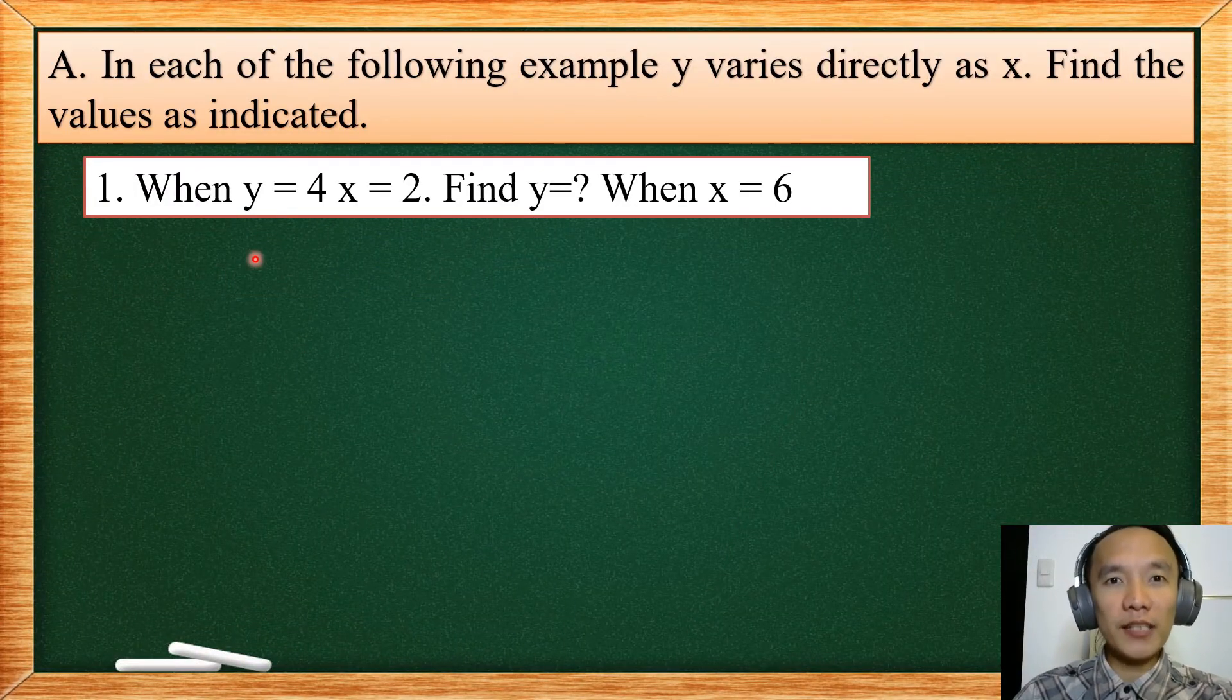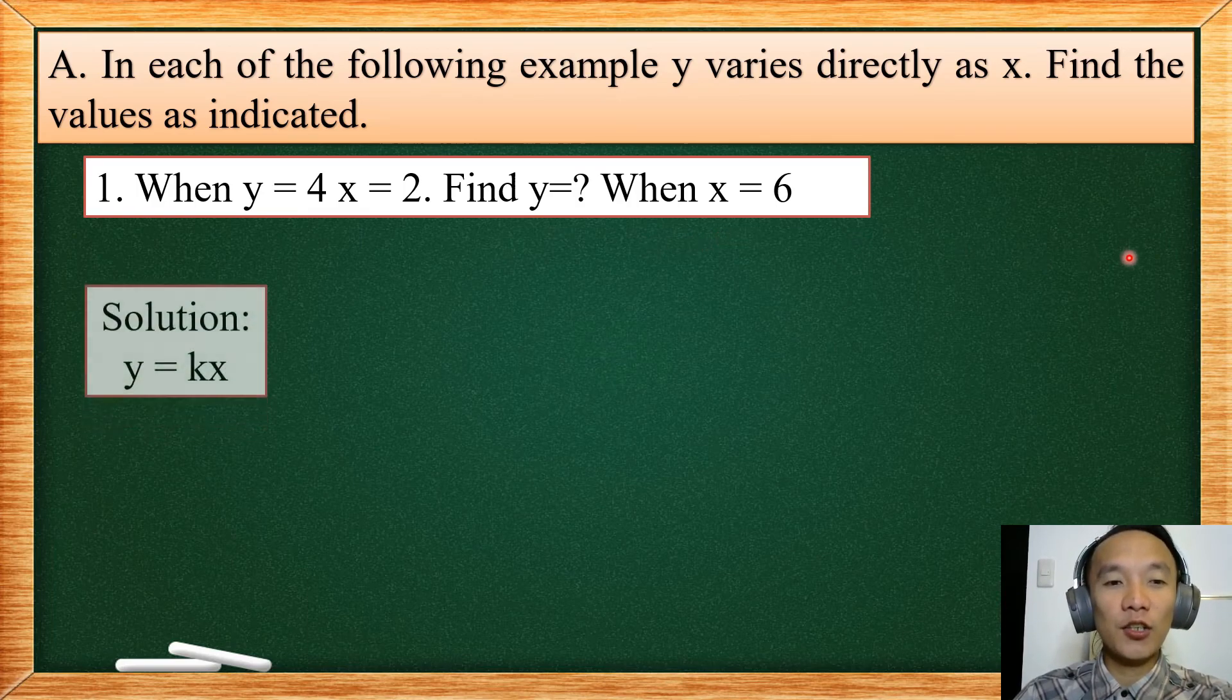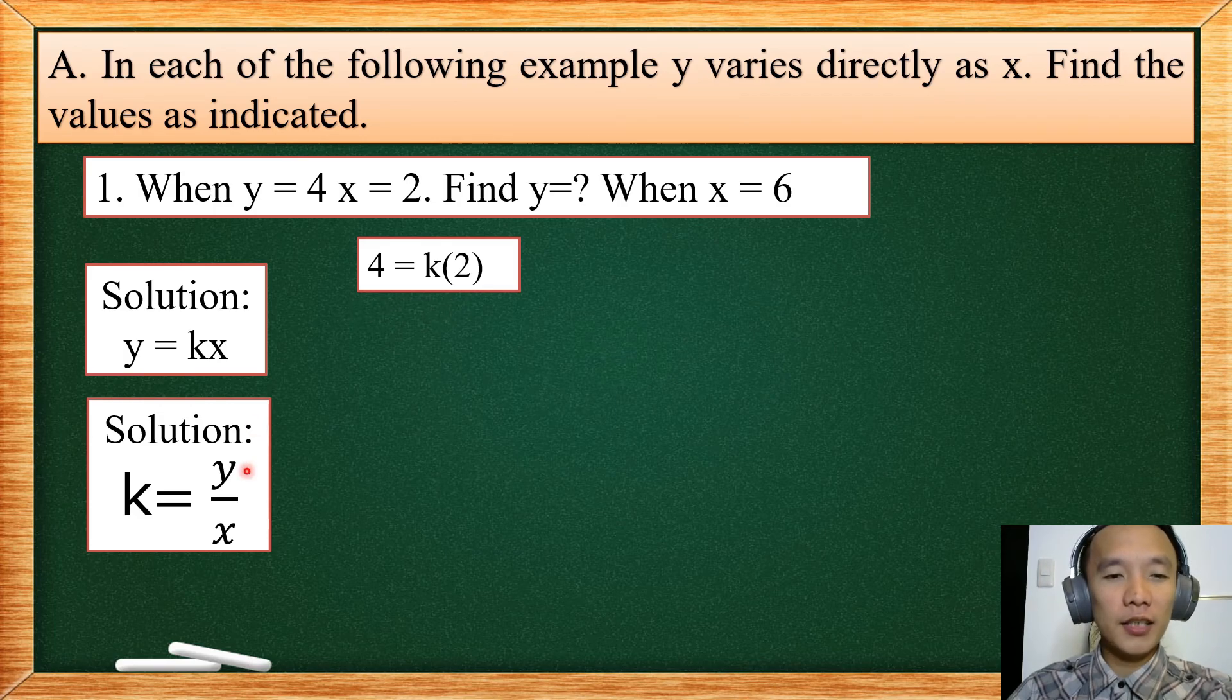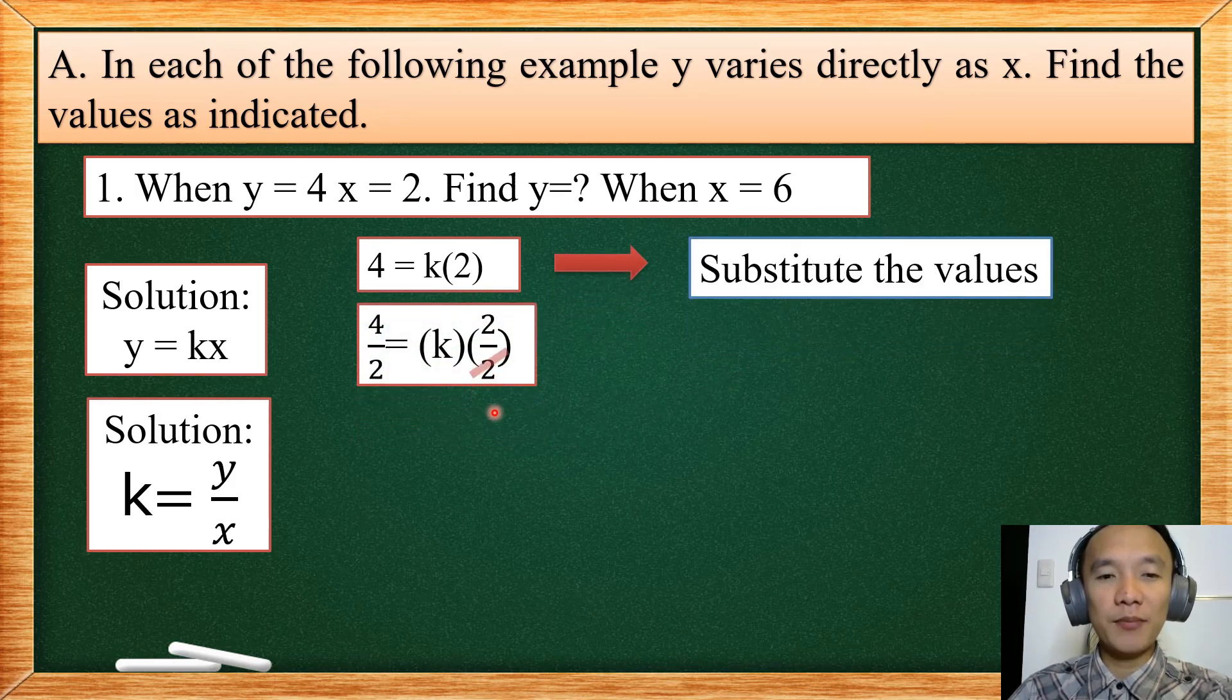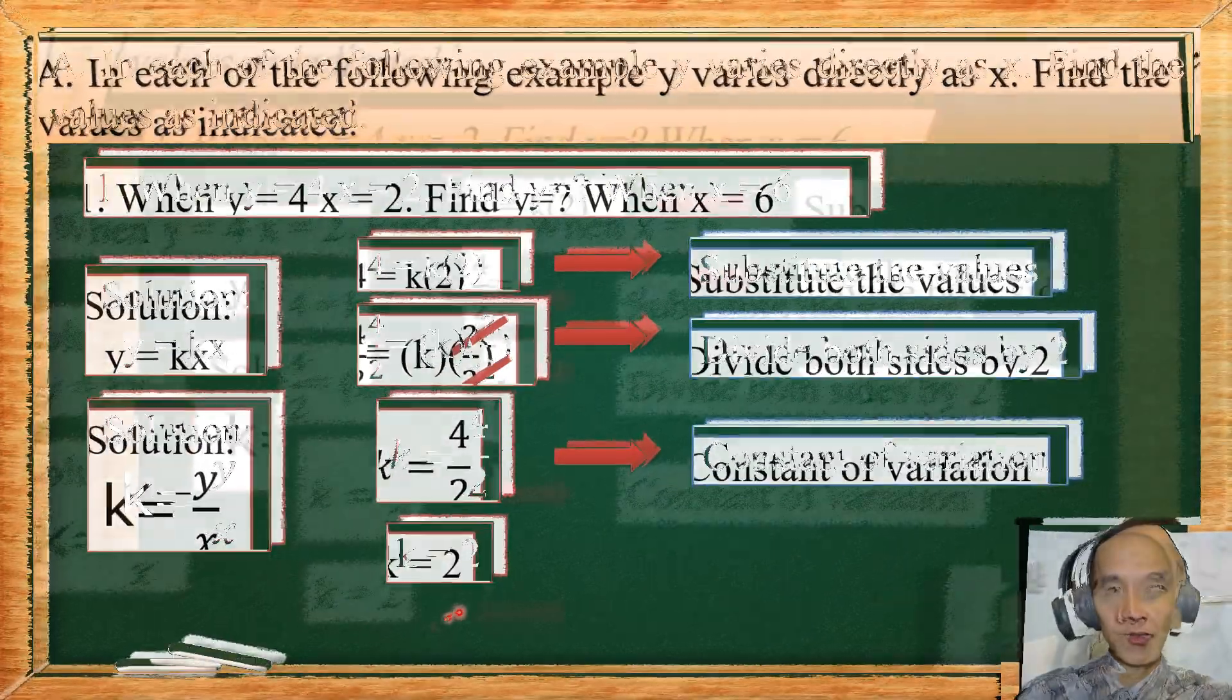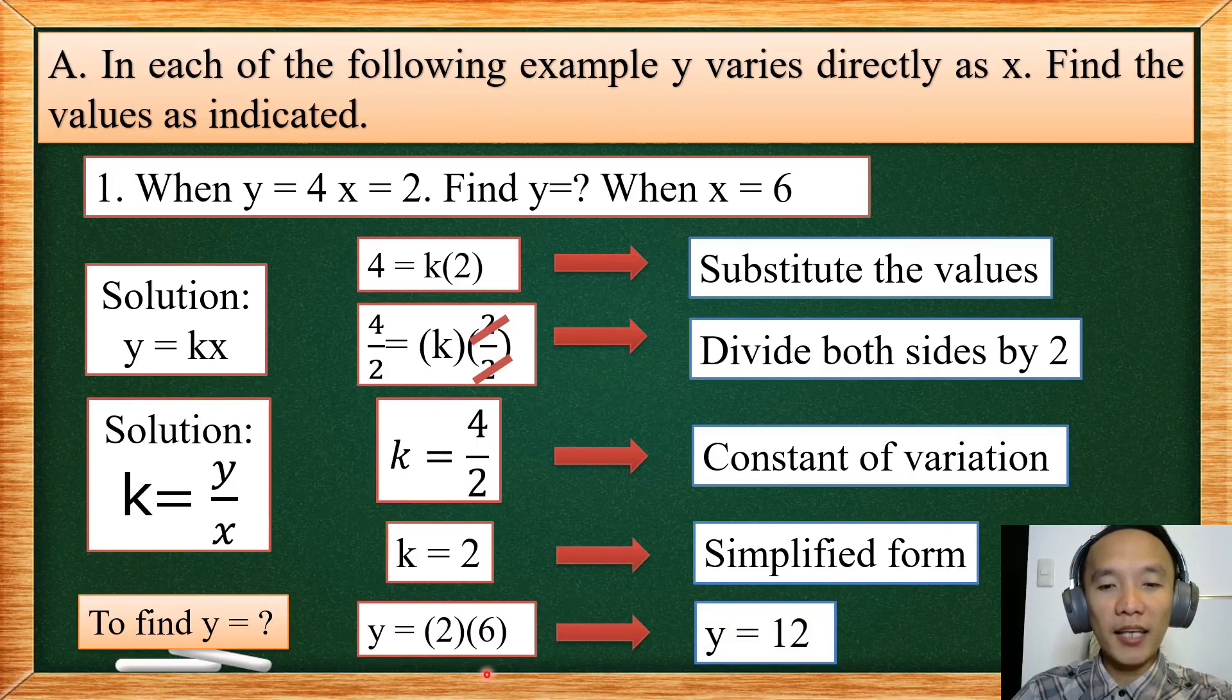Let's have now our solving. So our first ordered pair will be Y is equal to 4 and X is equal to 2. The second ordered pair, we don't know what is our Y and our X is 6. So using the formula Y is equal to KX, we are going first to solve our constant. So using 4 and 2, substituting 4 for Y and X for 2, then we are going to divide both sides by 2. After that, if you are going to divide 4 divided by 2, your constant of variation is equal to 2. So we can now use our general equation. K will be replaced by 2 and X now will be replaced by 6. So therefore, our Y is equal to 12.